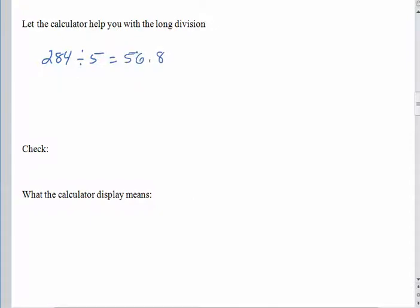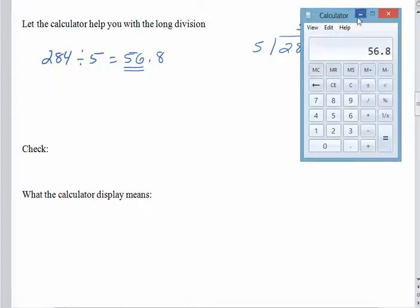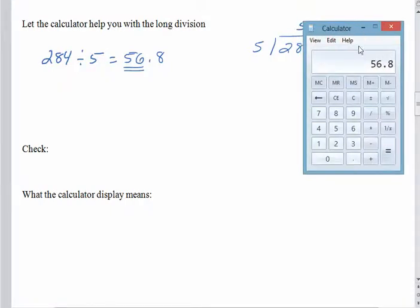Let me bring my calculator back. And we'll see what the calculator says. 284 divided by 5, and that gives us 56.8. So what is that 56.8 telling us? Because we had 4 inches left over, and there's no 4 here at all. So, to let the calculator help us with the long division, what we're going to do is pay attention to the whole number. Remember, the remainder is what happens after you divide by the divisor a whole number of times. So set up your long division like you normally would.